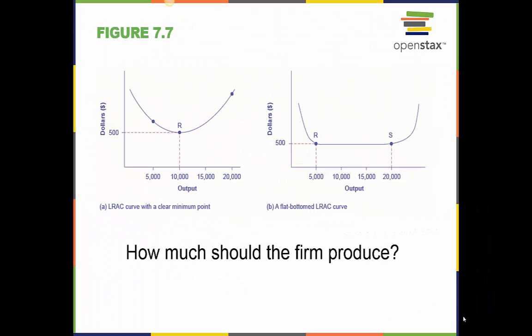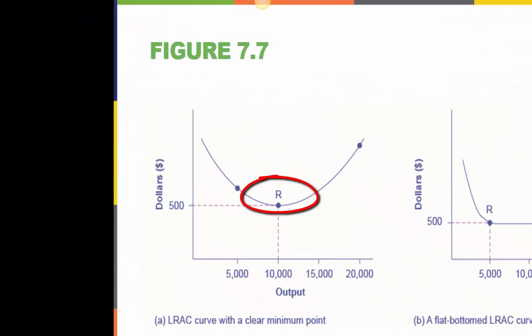In the long run, the level of production may be influenced by the market and the cost structure of its competitors. Low cost firms will produce at output level R when the long run average cost curve has a clear minimum point.